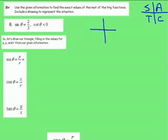So now we're going to take a look at example number 8, and for this situation we're given sine of theta is two-thirds, and cotangent of theta is less than zero, which means that my cotangent function is going to be negative.